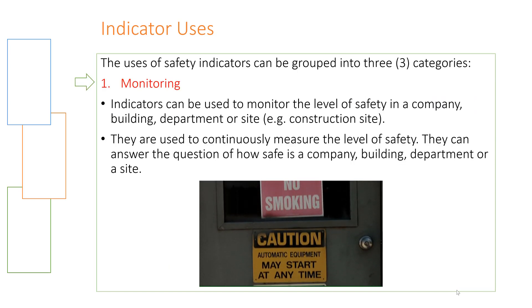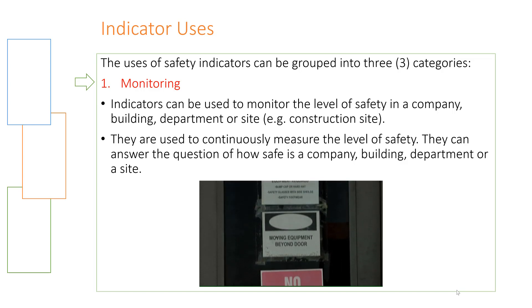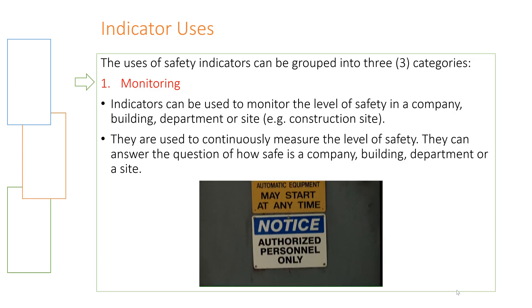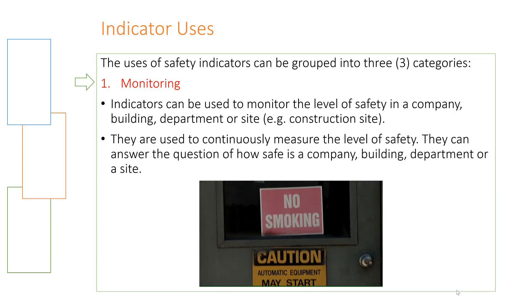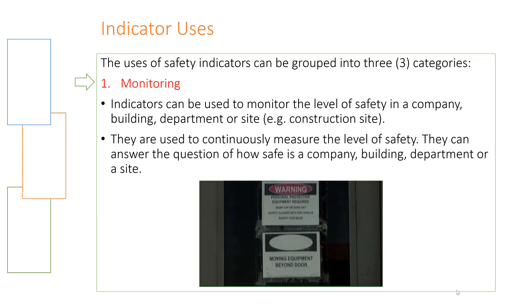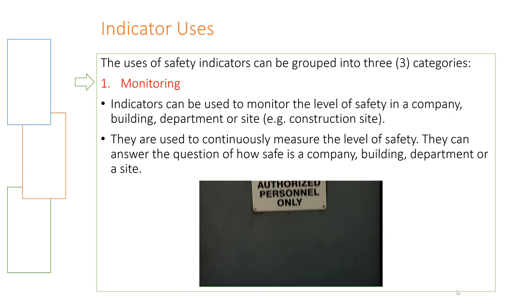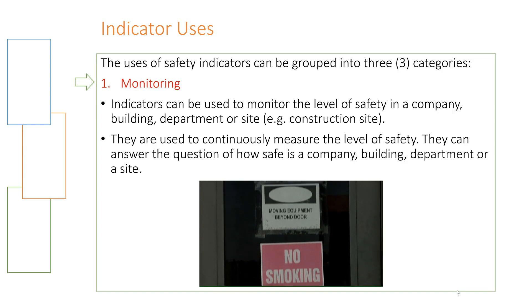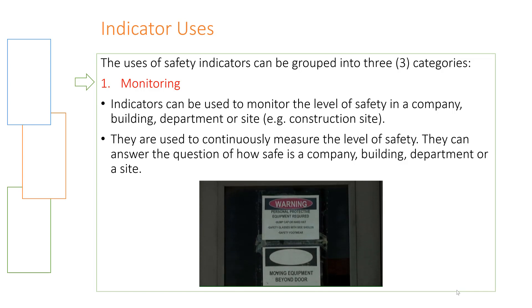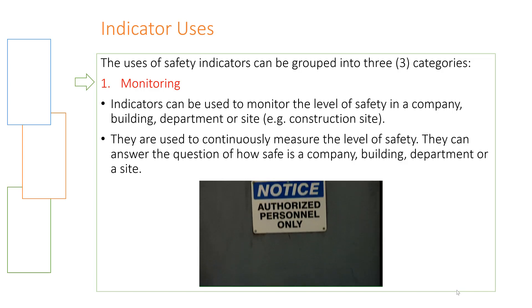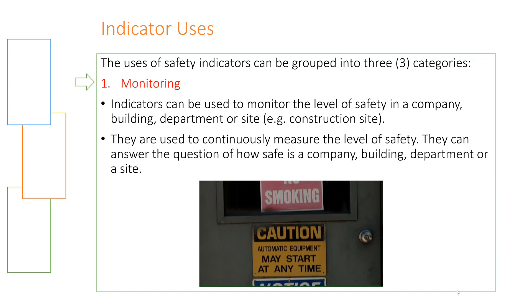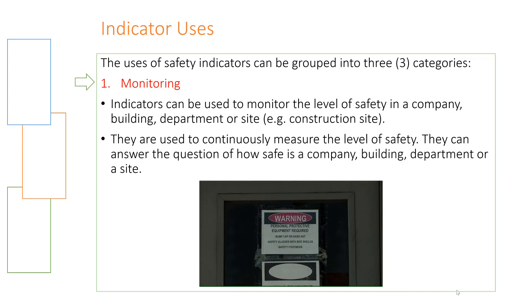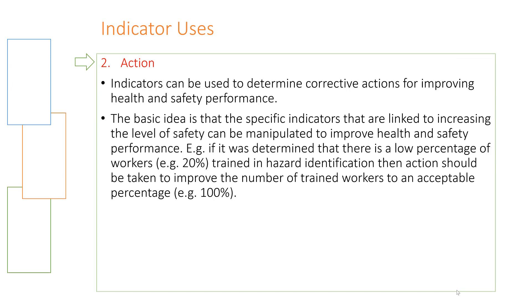The use of safety indicators can be grouped into three important categories. First, monitoring: indicators can be used to monitor the level of safety in a company, building, department, or site — for example, a construction site. In this regard, we use them to simply monitor what the current level of safety is. They are used to continuously measure the level of safety and can answer the question: how safe is a company, building, department, or site?